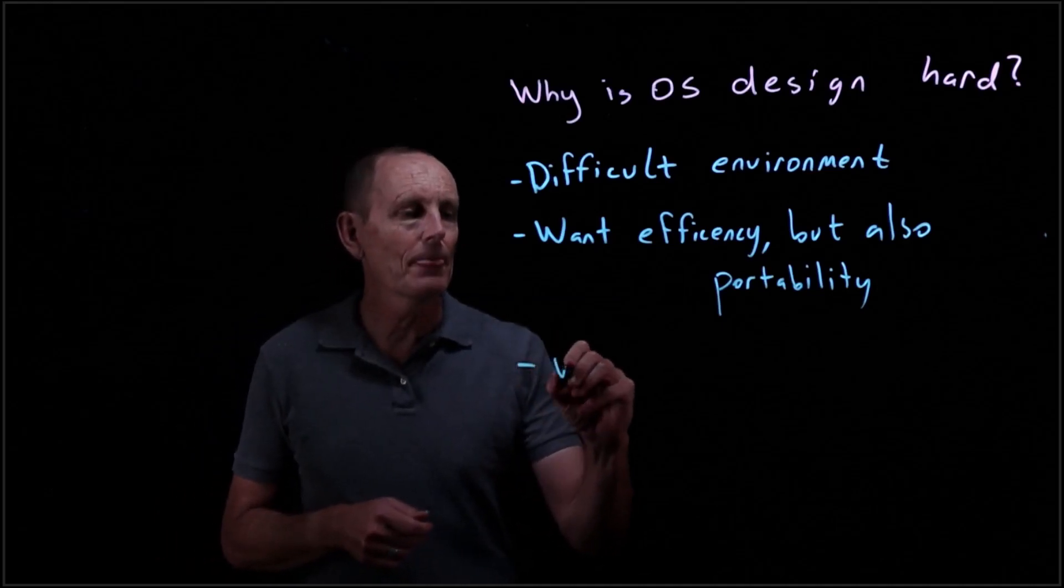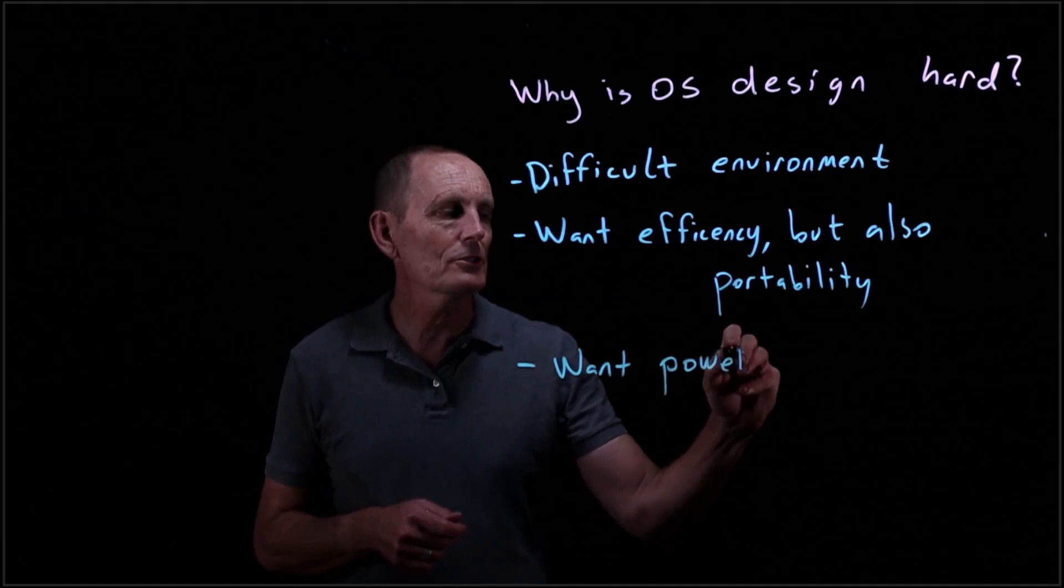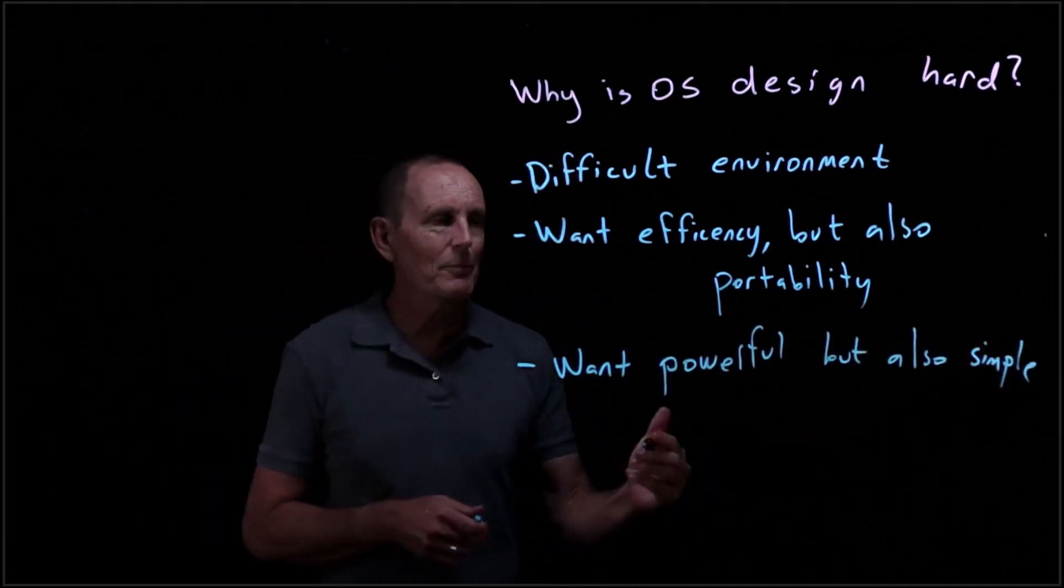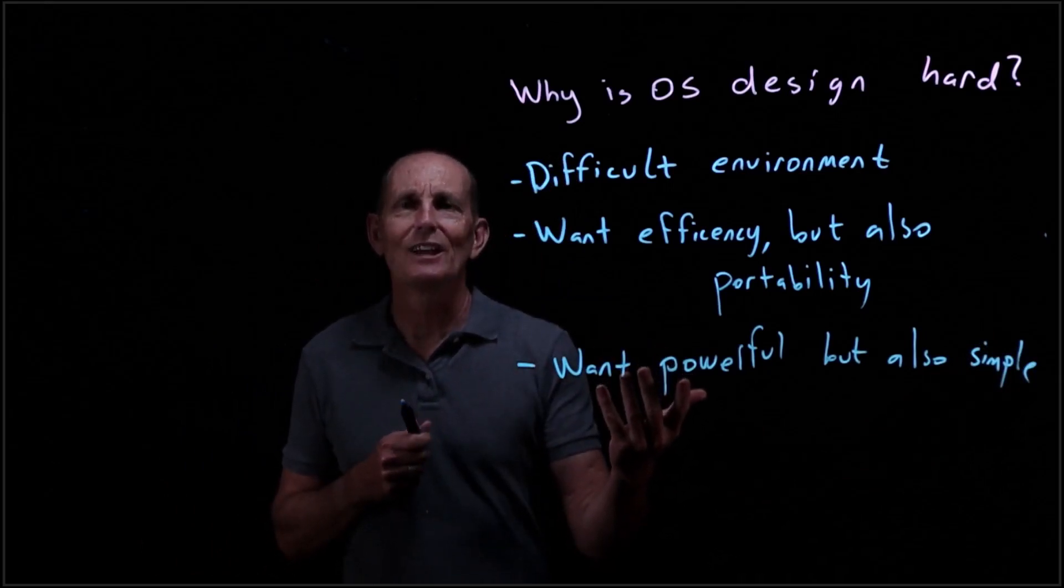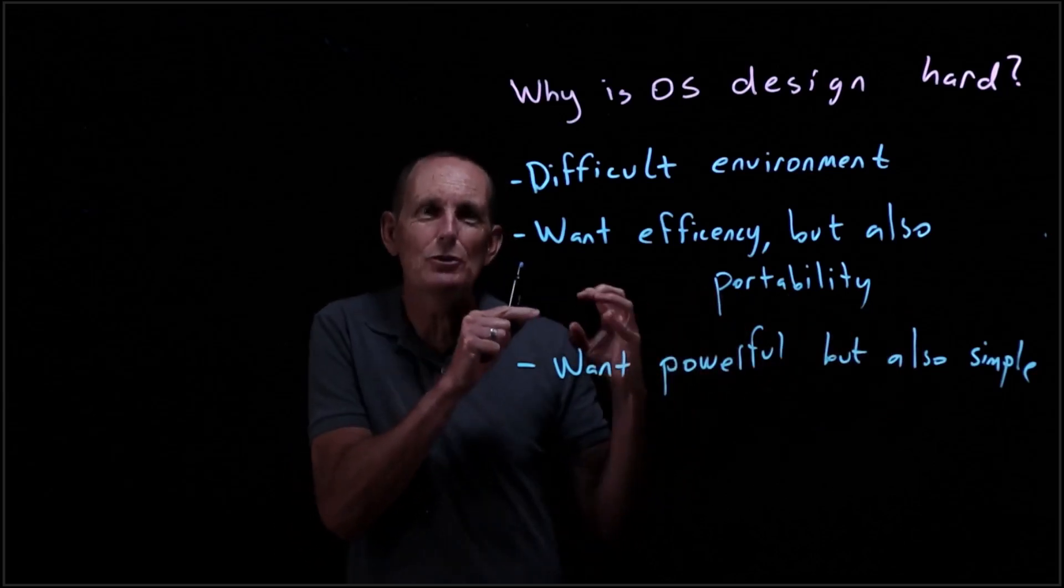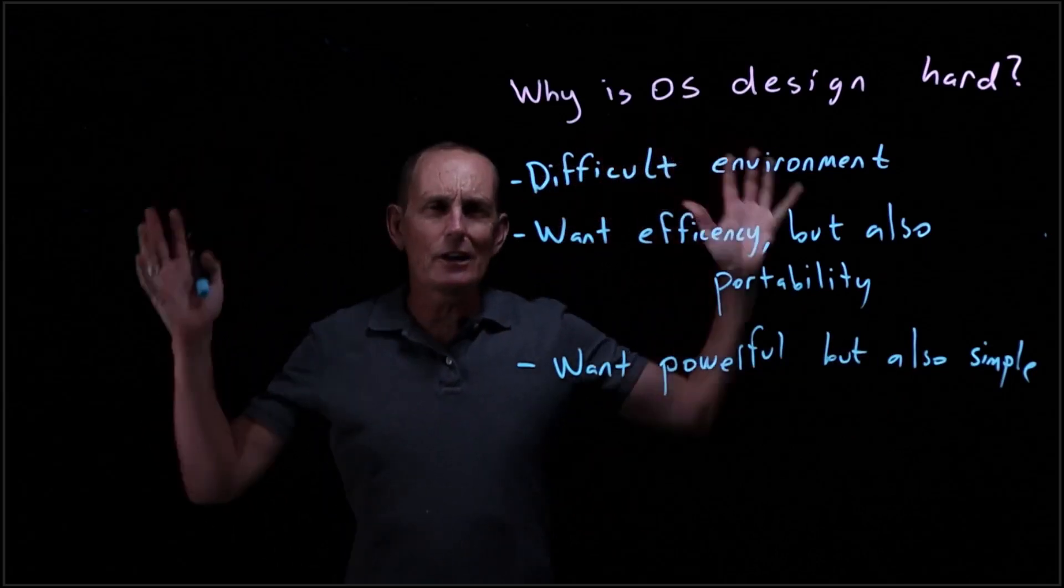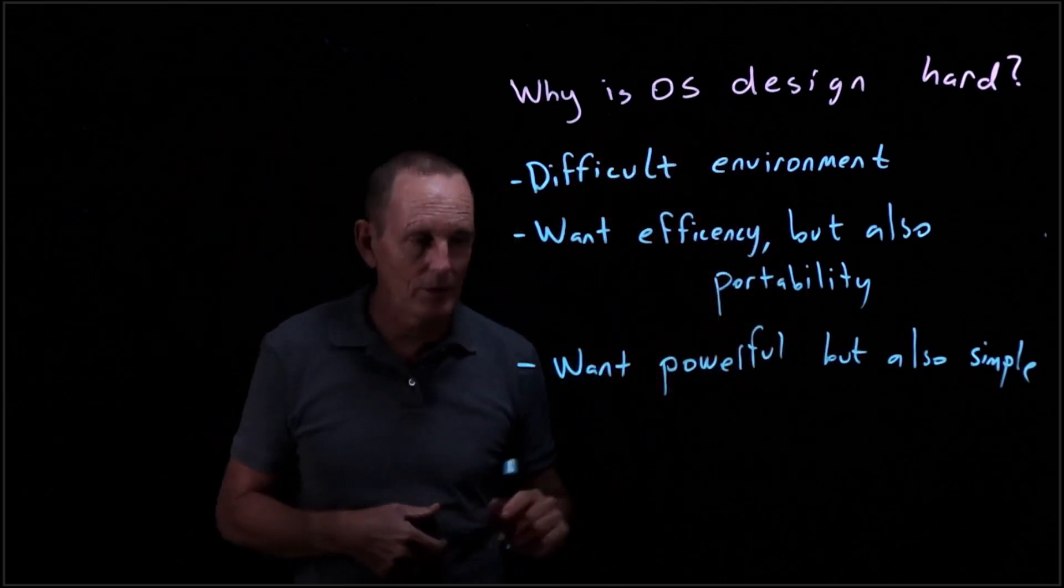Another one: we want powerful, but also simple. When we talk about power, we often mean lots of features. But on the other hand, when we're talking about simple, we want composable, few composable building blocks. So that we don't have a large space of things we need to think about, but we can really compose things that build together.